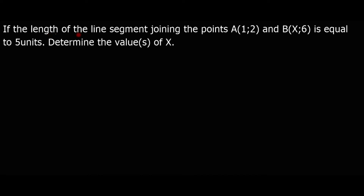Now, if the length of the line segment joining points A and B is equal to 5 units, determine the value or values of x. We look at these two points — one coordinate contains the unknown x. That is why the question asks for the value or values of x. The key thing is the distance AB is 5 units.